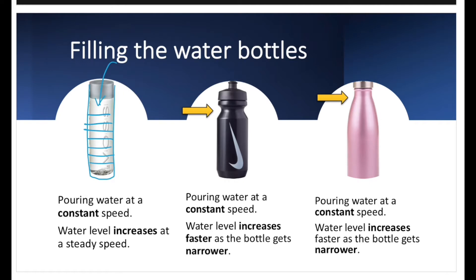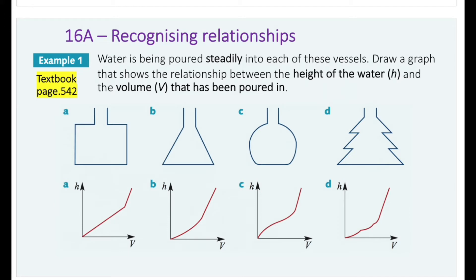When water is being poured constantly into the second bottle, the water level will increase faster as the bottle gets narrower. As you can see, for the narrower part of the bottle, the water level will increase faster compared to the rest. Similarly, for the third bottle, pouring water at a constant speed means the water level will increase faster as the bottle gets narrower. Pouring water steadily implies pouring at the same speed — not too fast or too slow.